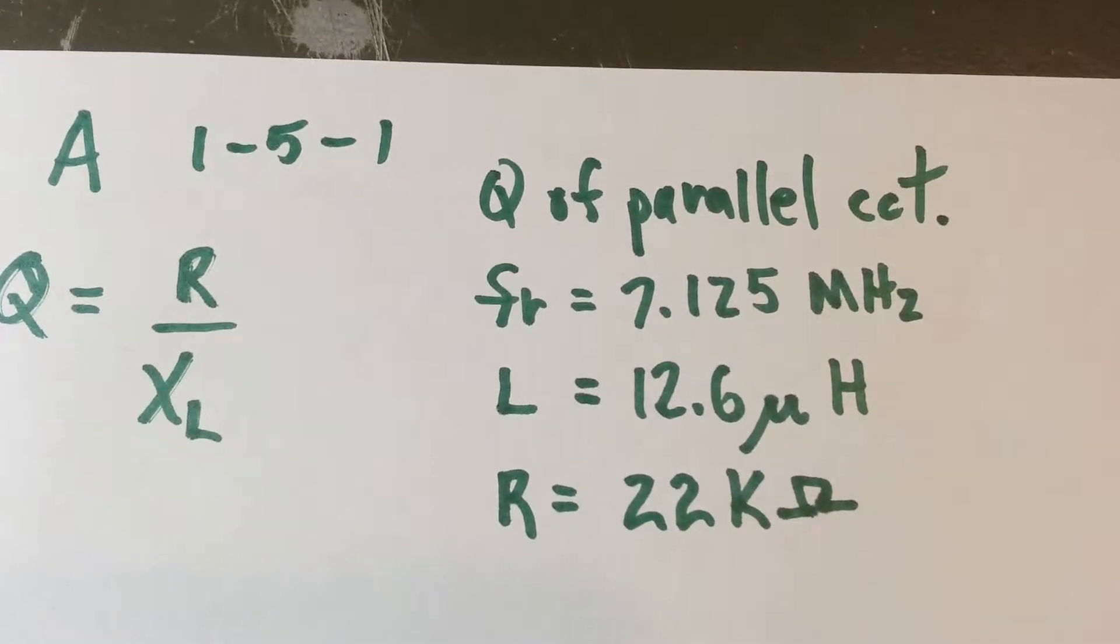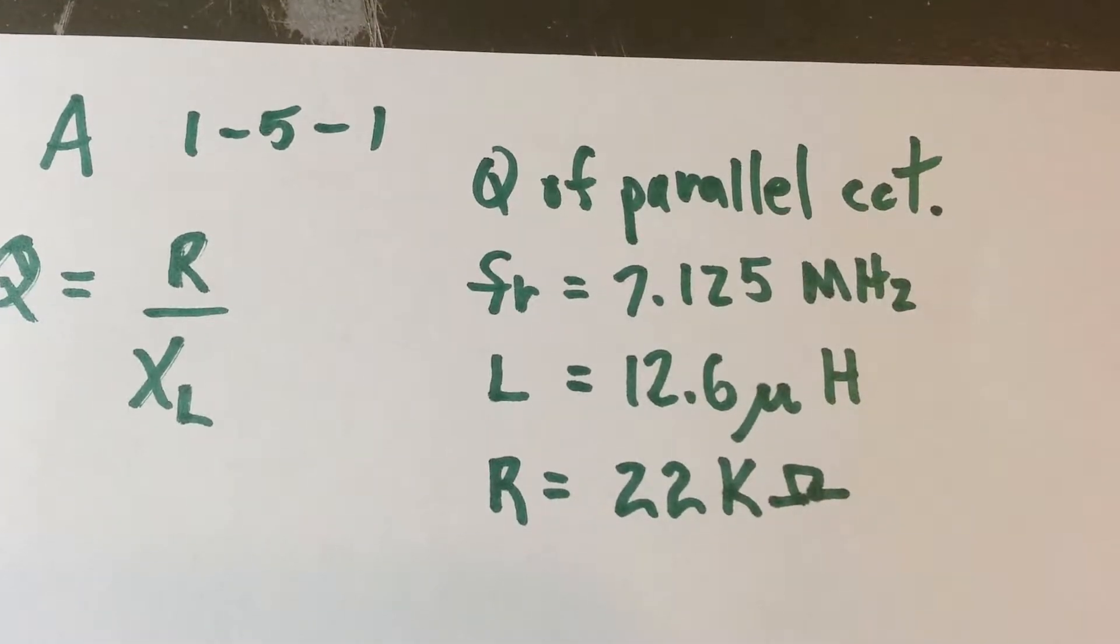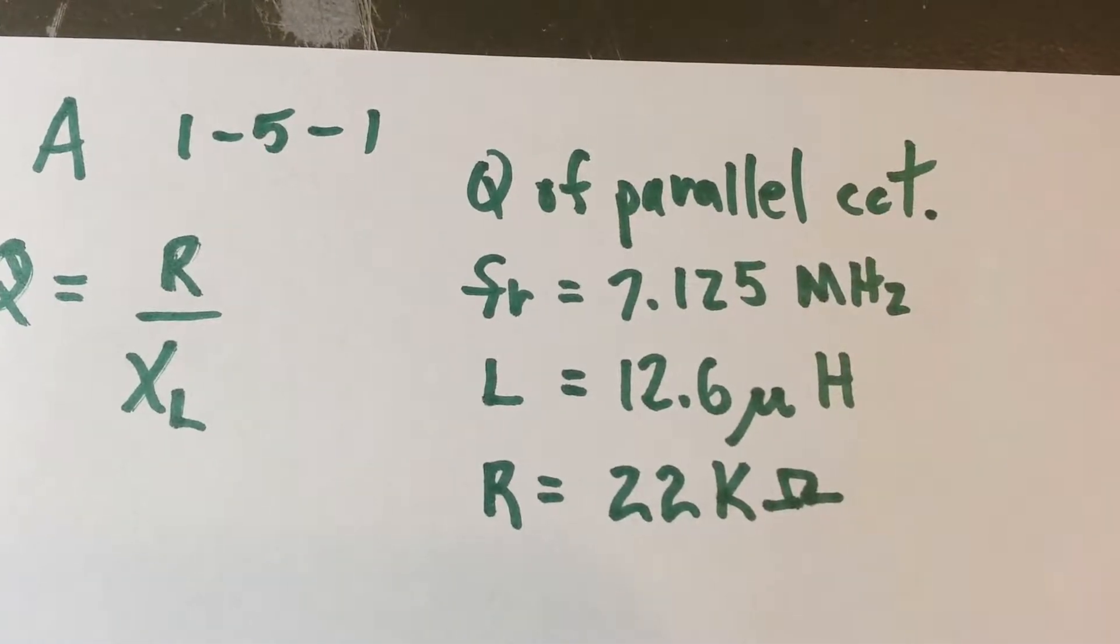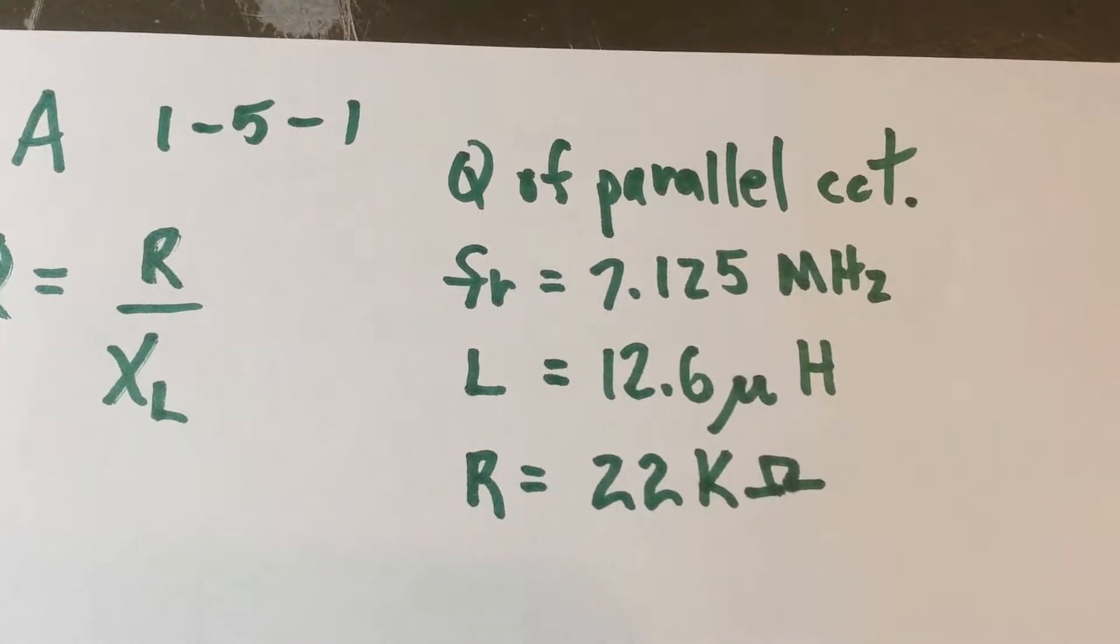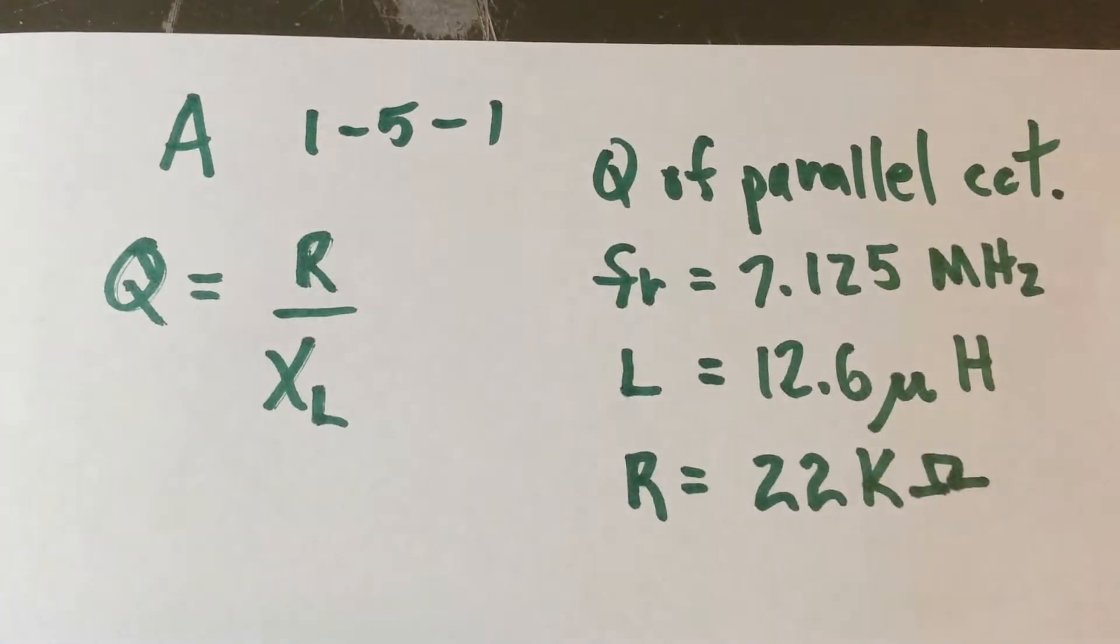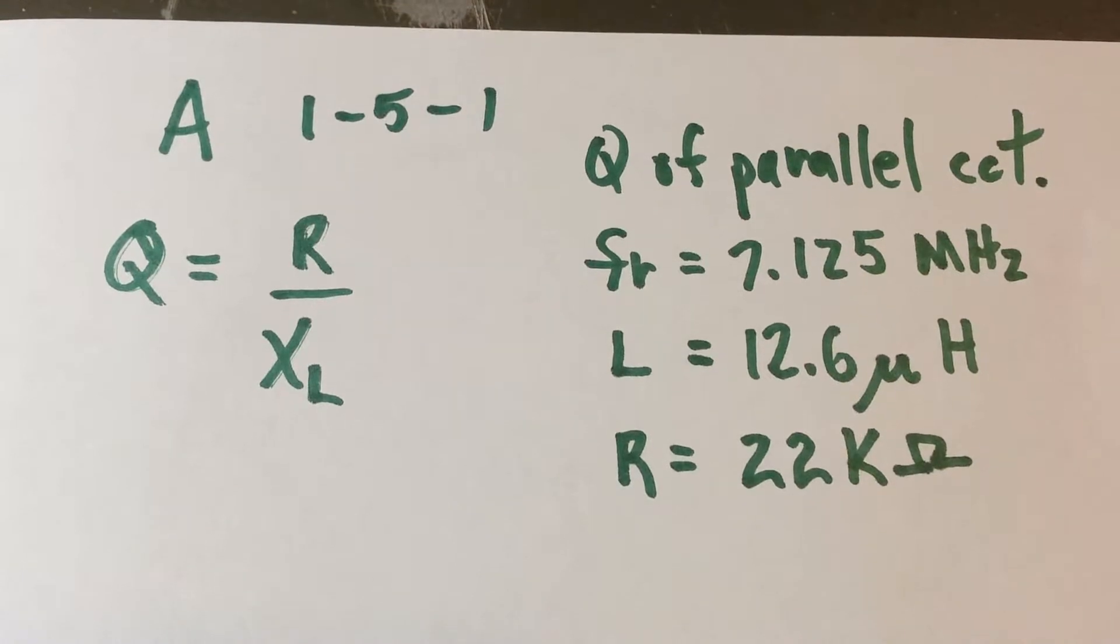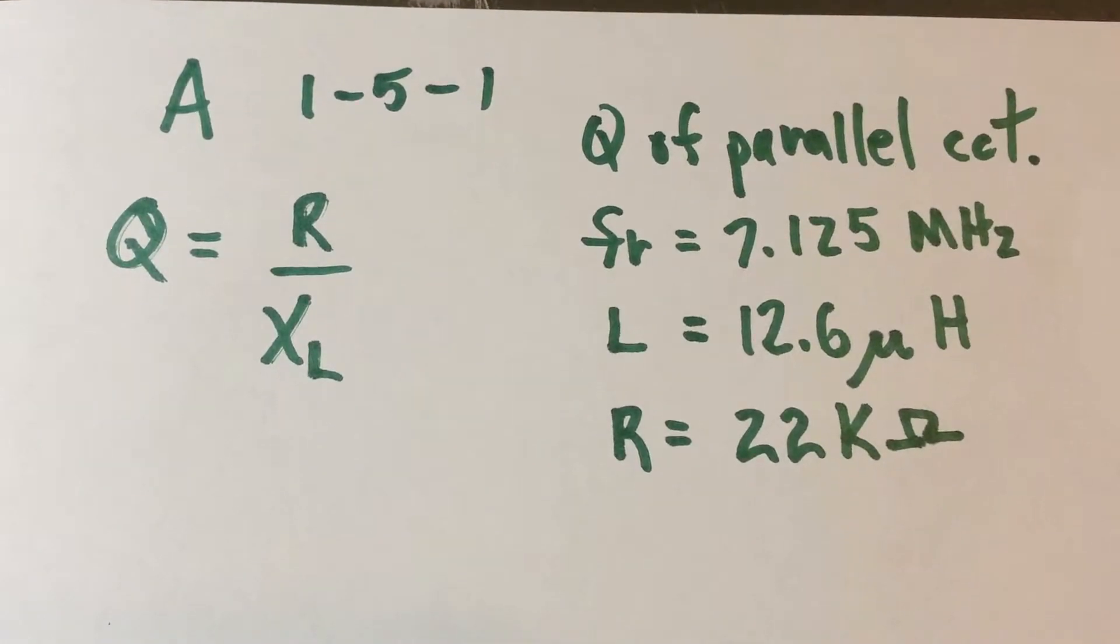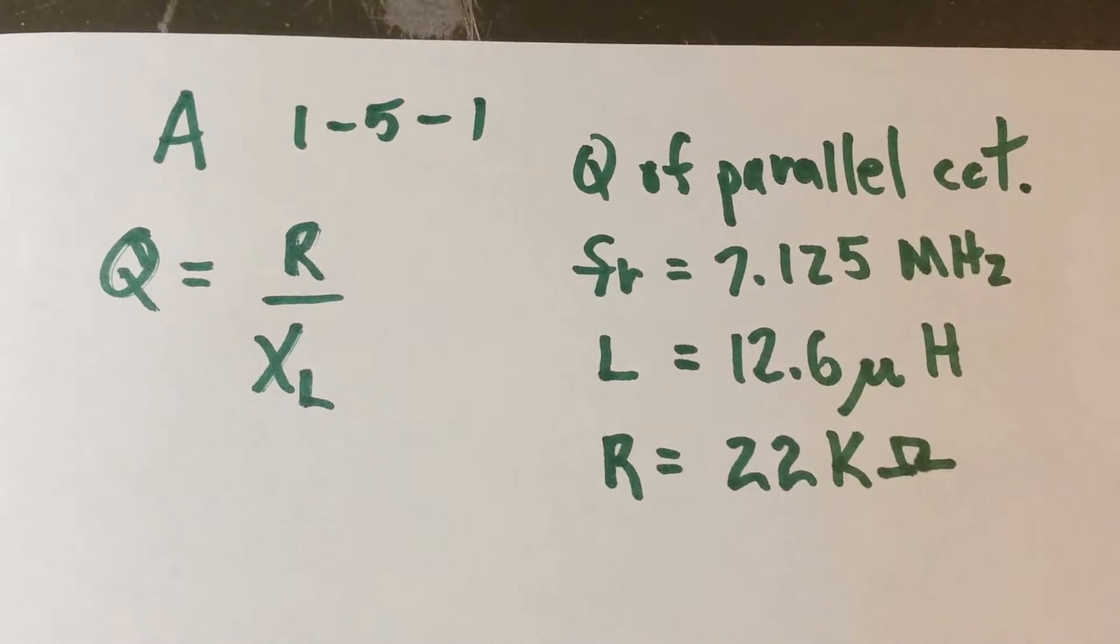Resonant frequency 7.125 MHz. L, or the inductor value, is 12.6 microhenries. And the resistance is 22 kilohms. So for a parallel circuit, Q is equal to the resistance divided by the reactance of the coil, or XL. And all we have to do is find the reactance of the coil.